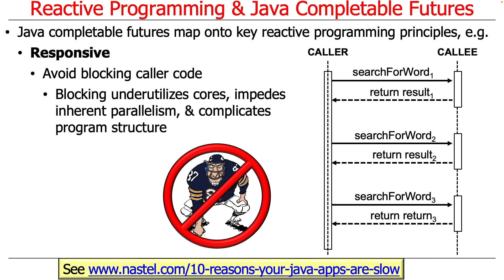The first principle is responsiveness. We want to be responsive — we don't want to block things. We don't want to keep the user interface code from being able to react to user events like touch screen events, mouse events, or GPS location signal events. The whole goal is to avoid blocking the caller, because whenever you block the caller, that will either underutilize the cores — chewing up a core that could be used for something else — thereby impeding the inherent parallelism on multi-core systems or systems with direct memory access, and it can also complicate program structure.